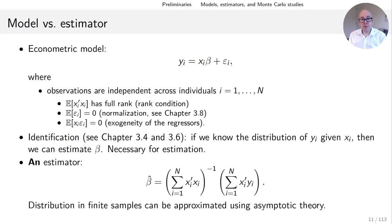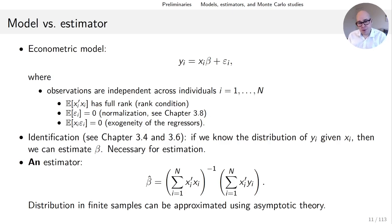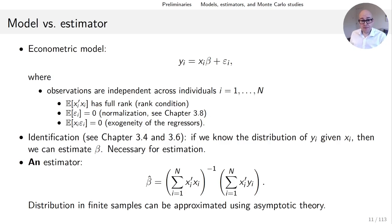If you want to learn more about normalizations, I recommend looking at chapter 3.8 in the lecture notes. We'll return to this later. The third assumption is the exogeneity assumption — written here as zero covariance between xi and epsilon i. If that covariance is zero, xi is called exogenous, and you've learned that exogeneity is a key assumption.